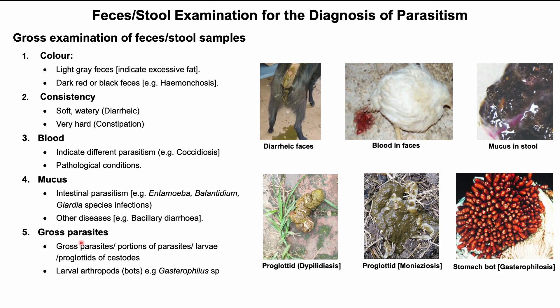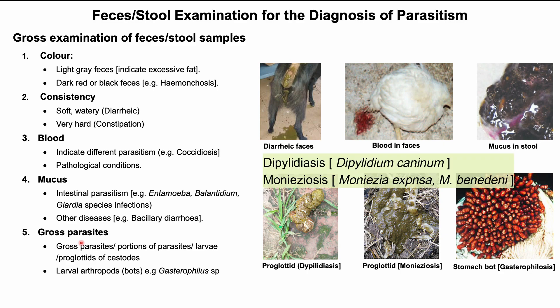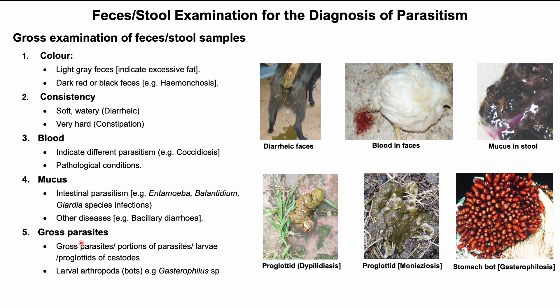Various parasites such as ascarids, larvae of roundworm in case of lungworm infection in different animals, larvae of stomach bot flies in case of gastrophilosis, and proglottids of cestodes such as dipylidiasis and monieziasis can also be seen in feces. Feces are also examined for odor; for example, fetid diarrhea is seen in case of paramphistomiasis.